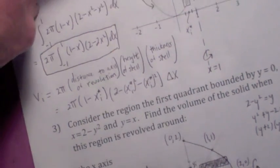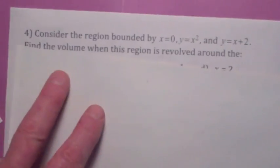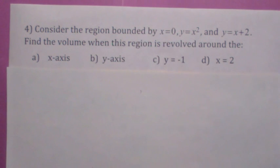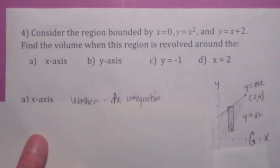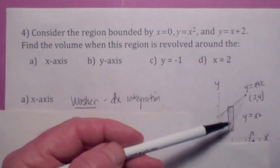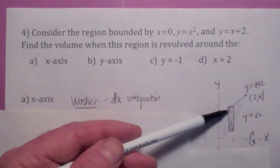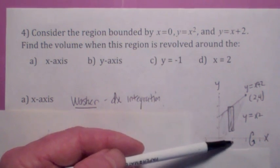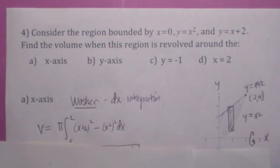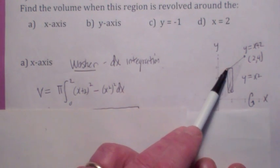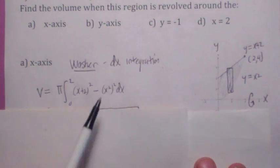I'm going to give you a bunch of practice problems. Some of them would be easier with the disk washer method, some with the shell method. Here's the region — if you're revolving around the x-axis, wouldn't it be better to use the washer method? You could do it all in one integral. It would be π from 0 to 2 of the outer radius squared minus the inner radius squared: the outer radius squared would be (x plus 2) squared minus the inner radius squared, which is x squared squared.